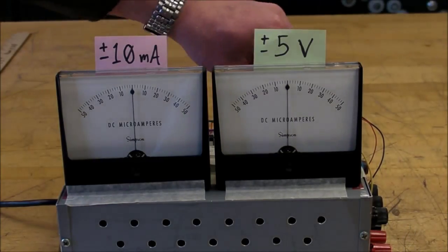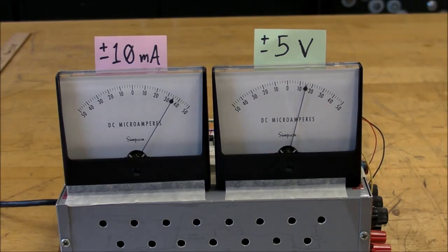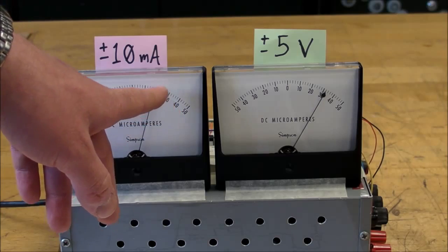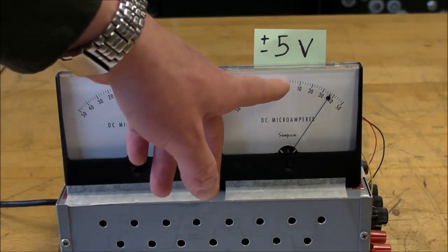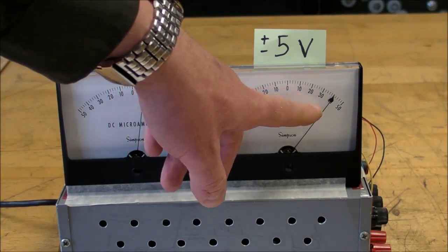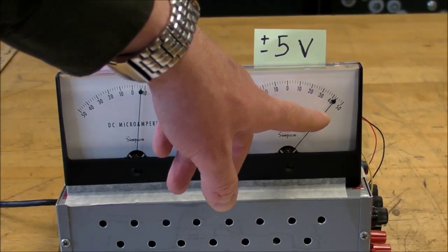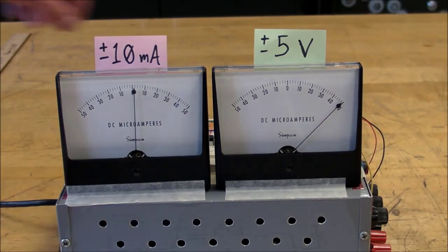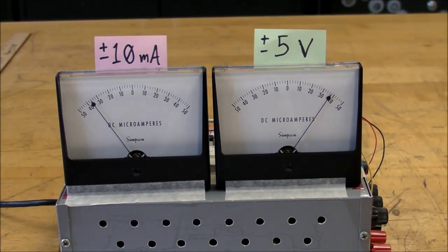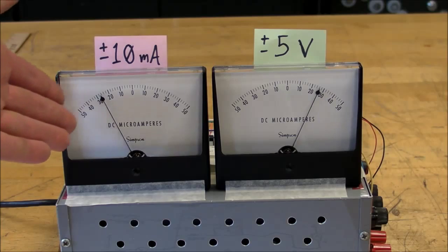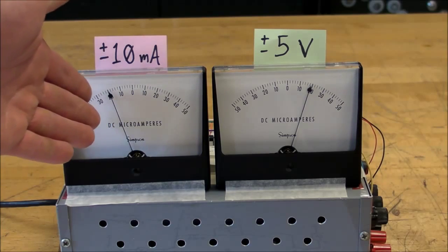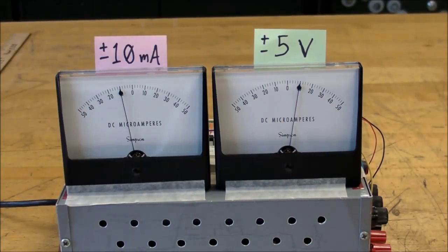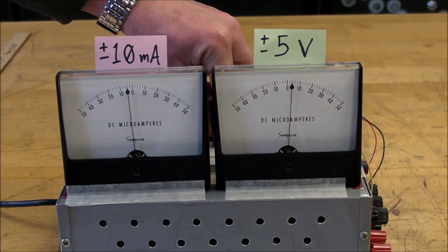And there we go. As you might expect, the current kind of spikes up there and then steadily goes back down, and the voltage had a very rapid increase and now it's steadily finally getting up to about 5 volts. Let's discharge it back down to ground. The current goes down the other direction, spikes in the other direction and comes back to zero as the voltage goes from 5 volts back down to zero.